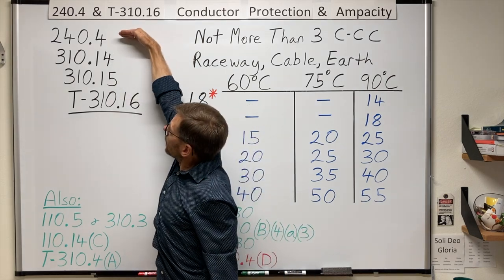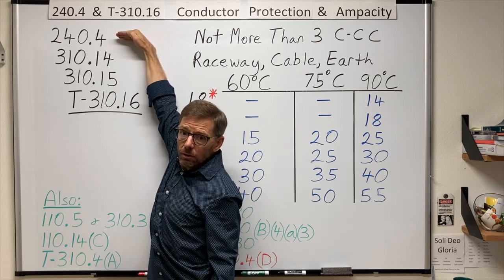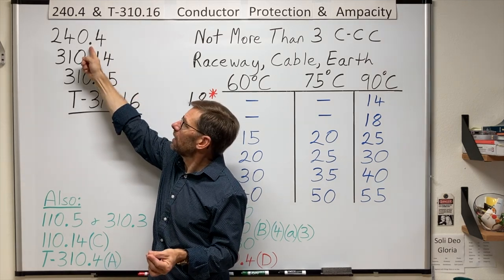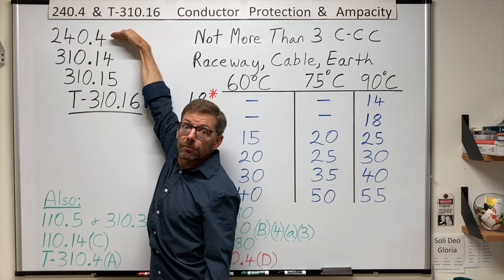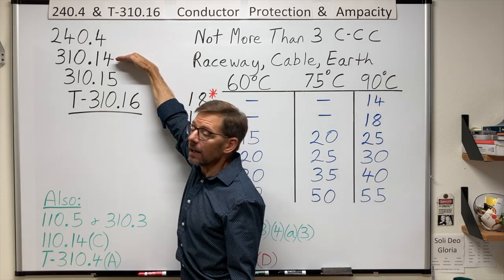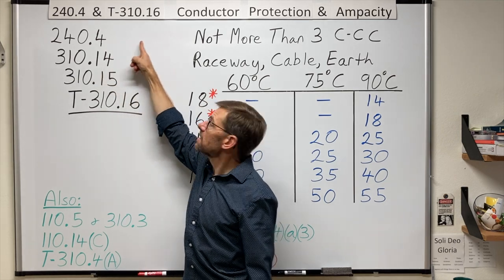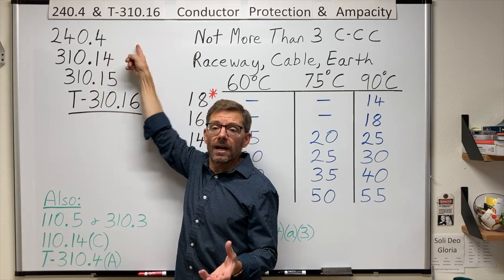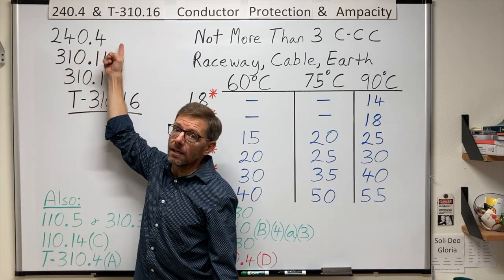Well, let's jump in. 240.4, protection of conductors. It says, general, it says that conductors, other than, and then it lists a couple types that are talked about in .5, but generally speaking, conductors shall be protected from overcurrent based on their ampacities found in 310.14. But before I go here, I've got to finish my sentence. It says, use these ampacities unless otherwise permitted or required in 240.4 A through G.